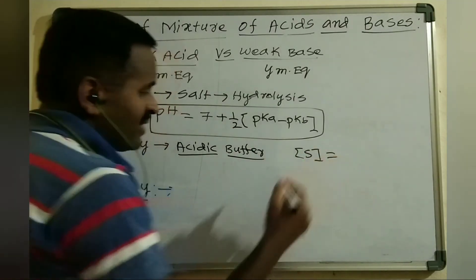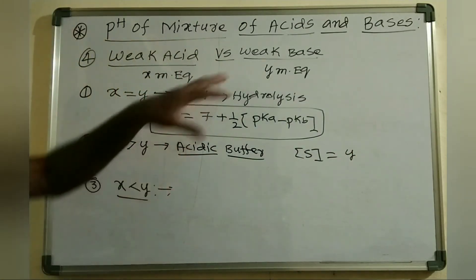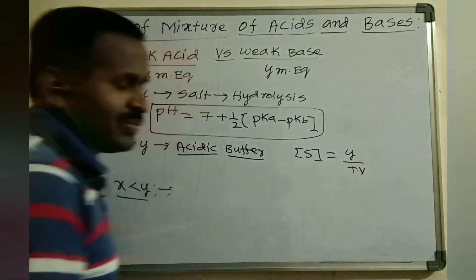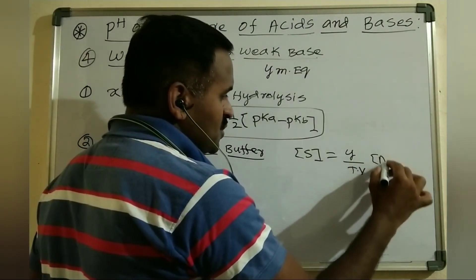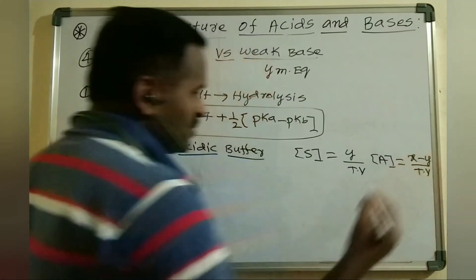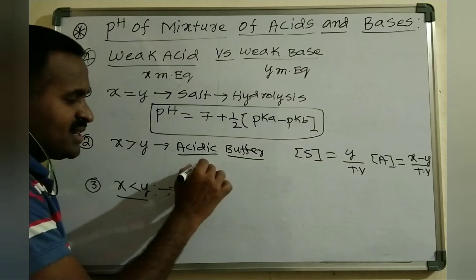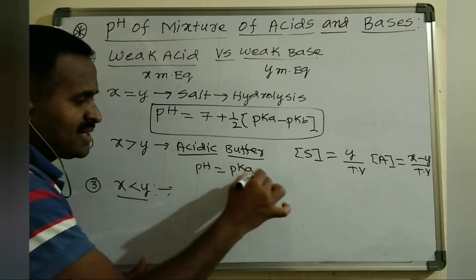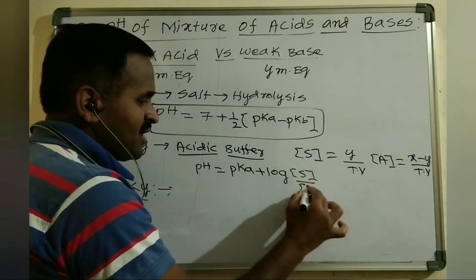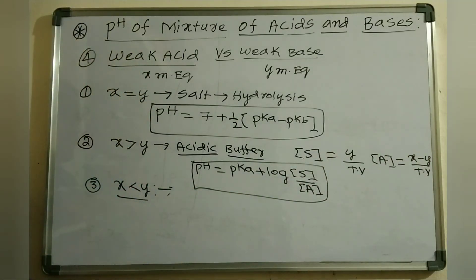For the acidic buffer: salt concentration equals Y divided by total volume, because the weak base is completely consumed as it is the limiting reagent. Acid concentration equals (X minus Y) divided by total volume. Using the Henderson equation: pH equals pKa plus log of (salt concentration divided by acid concentration).